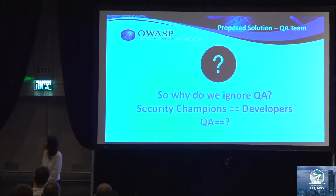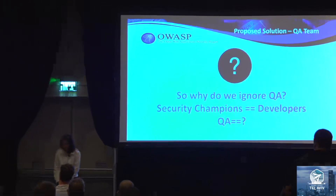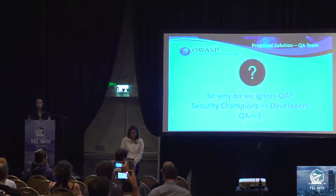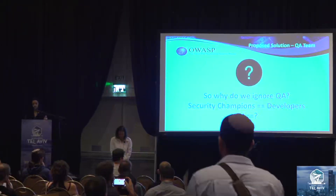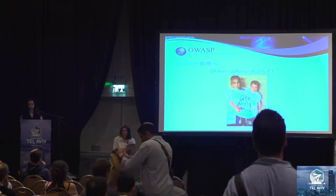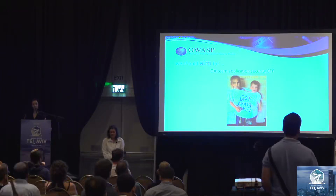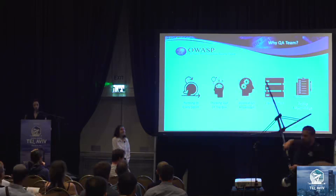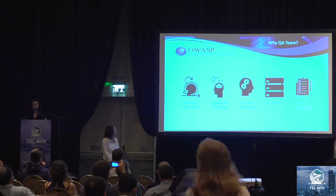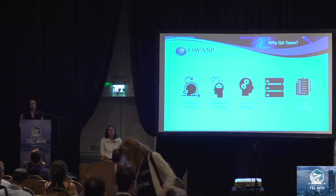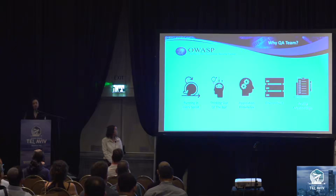Often we talk about developers, but we rarely mention the QA team. We propose solving the problem by working together with the QA team, and they help us perform the security testing. In our experience, the QA team and the security team can work very well together. Why do we choose the QA team? Because they are running tests in every sprint, they are thinking out of the box, they already have an environment ready, they know the application very well — the business and the functionality — and because of that, it's very easy to insert additional test cases.